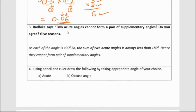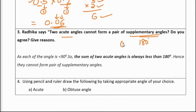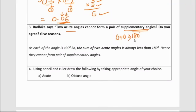Moving on to the third question: Radhika says two acute angles cannot form a pair of supplementary angles. Do you agree? Give a reason. Supplementary angles are two angles whose sum is 180 degrees. We do not agree, because each acute angle is less than 90 degrees. Two angles each less than 90 degrees cannot add up to 180 degrees, so they cannot be supplementary angles.